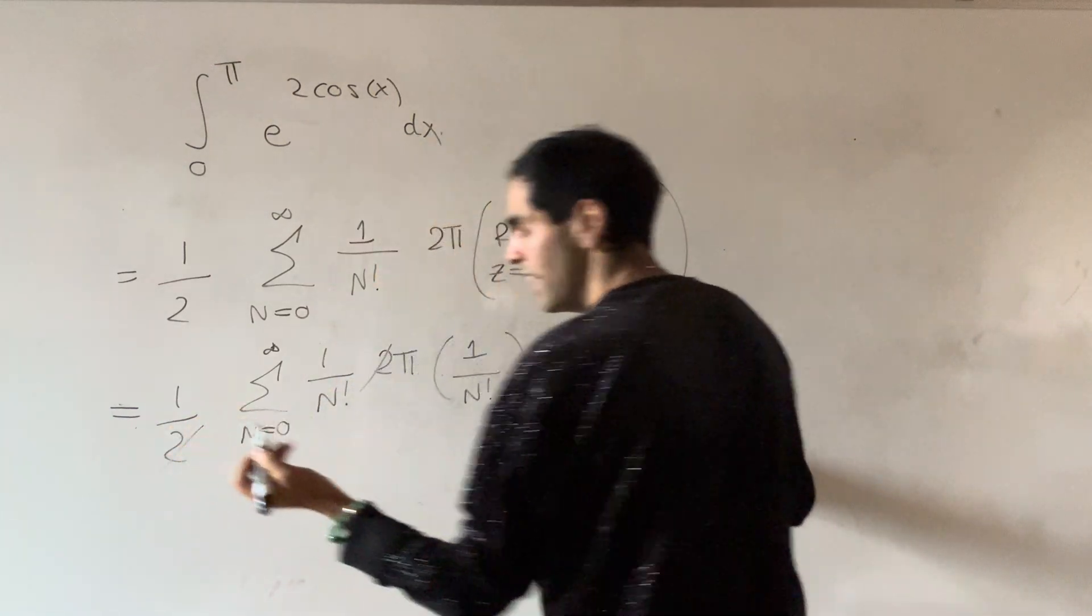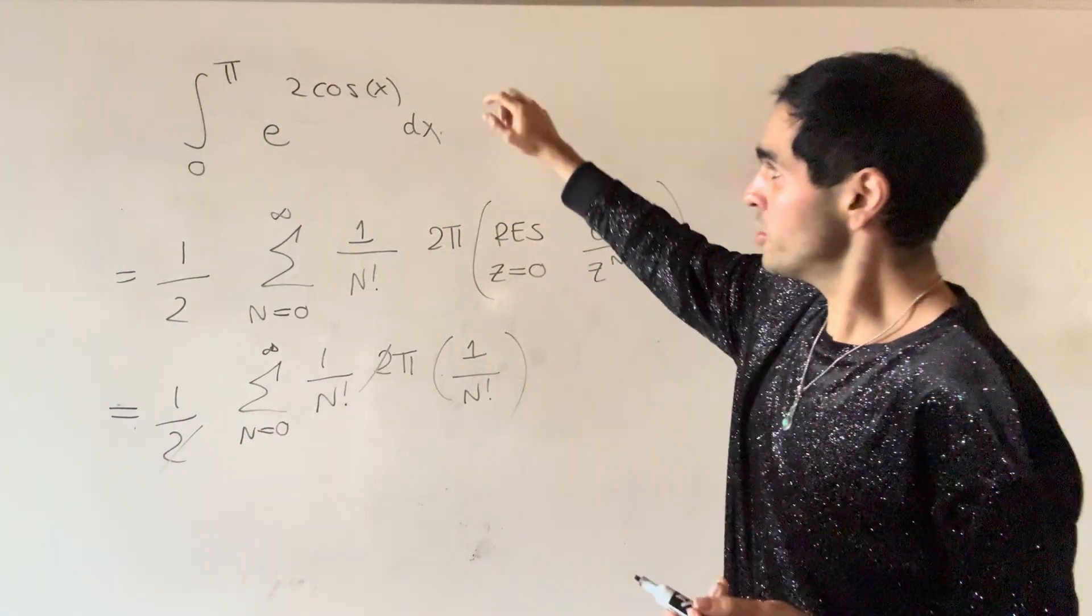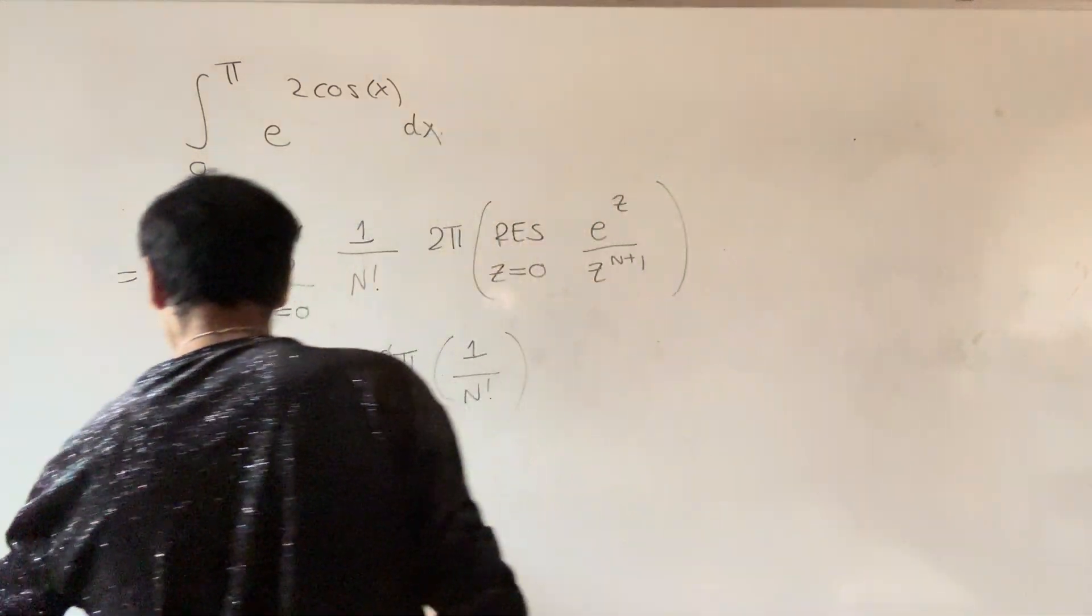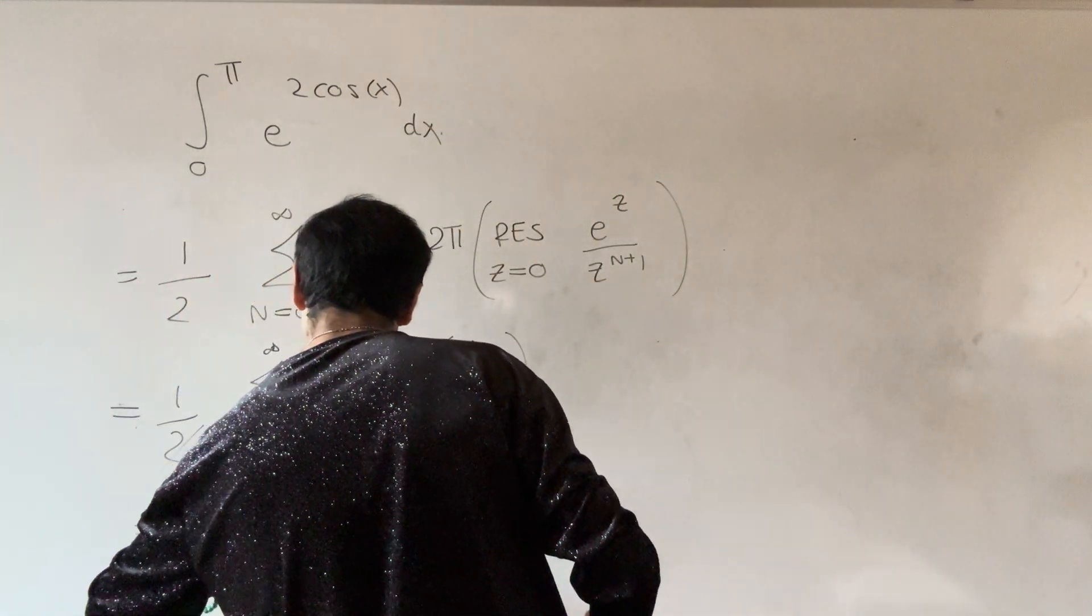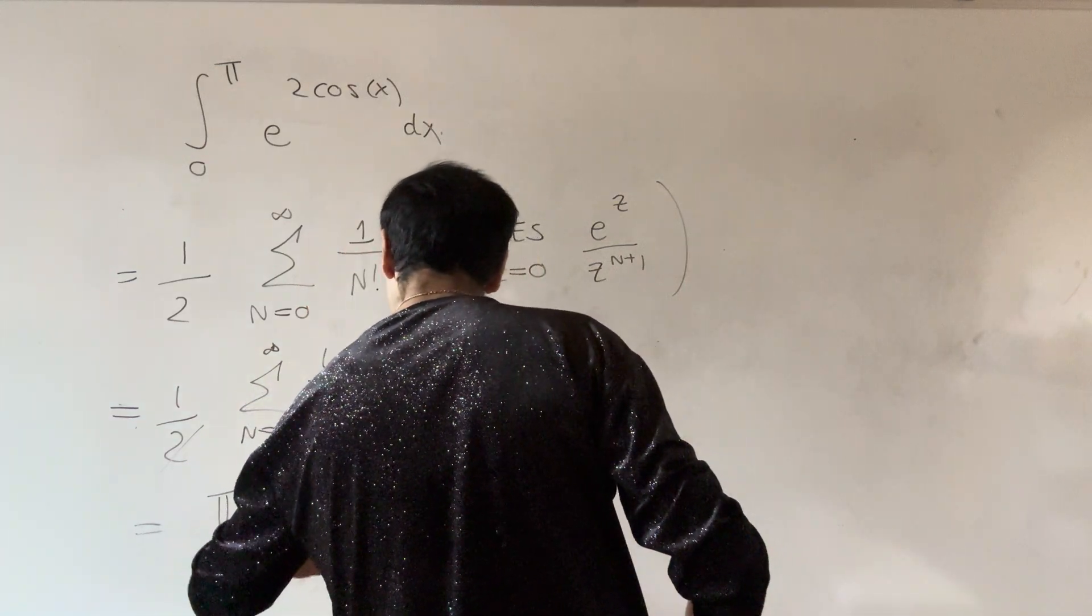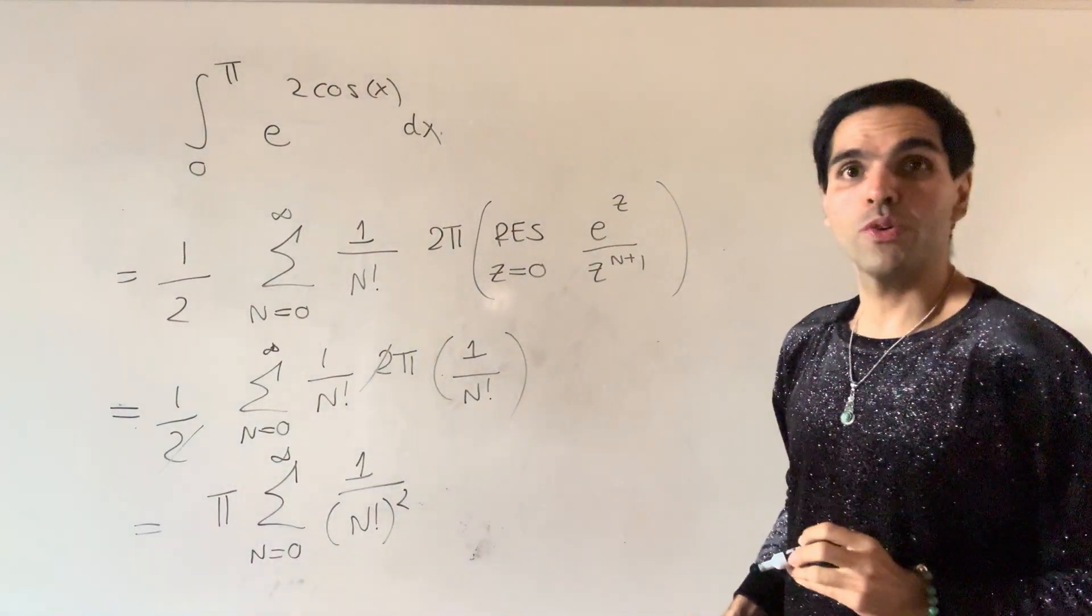Now, the twos cancel out, and the pi comes out. So, in the end, what is the answer? This integral, is really this magical series, pi, times the sum, from zero to infinity, not one over n factorial, but one over n factorial squared.